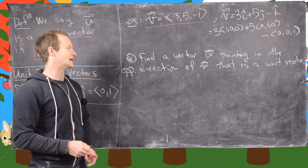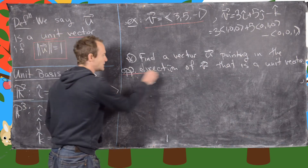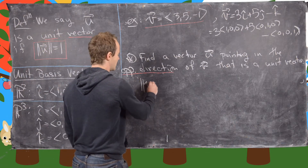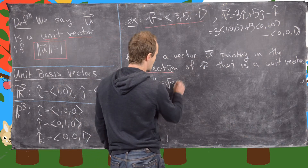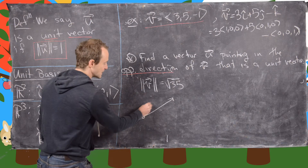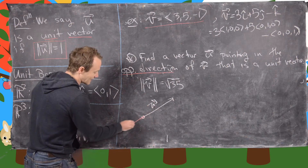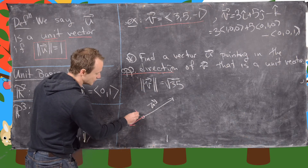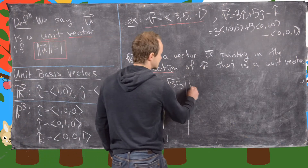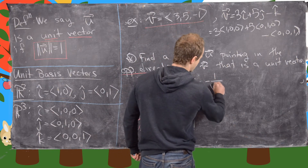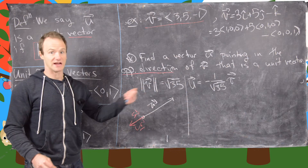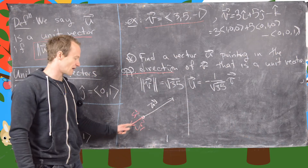Now let's find a vector u pointing in the opposite direction of v that is a unit vector. Recall the length of v equals √35. Instead of pointing in the direction of v, we want something pointing exactly in the opposite direction. We set u equal to (-1 over √35) times v — that is, negative 1 over the length of v times v. The minus sign makes the direction opposite.